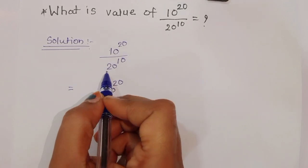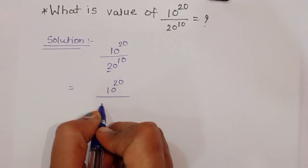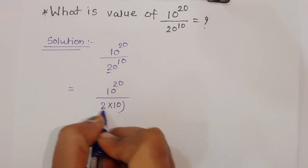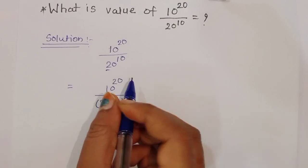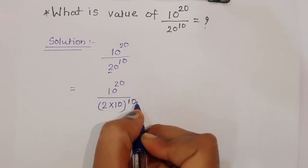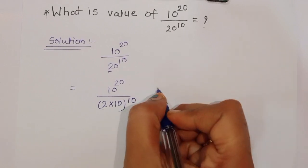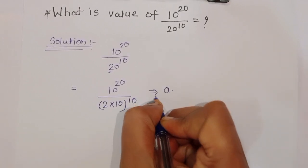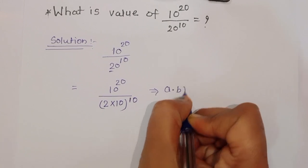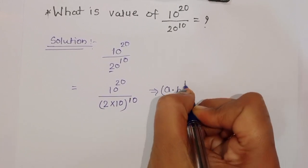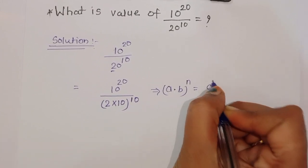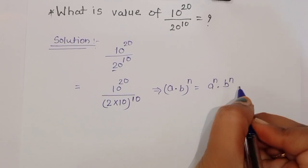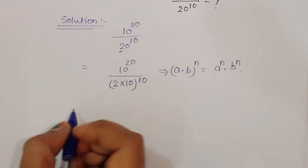We can write 20 as 2 times 10, so the denominator becomes (2 times 10) raised to 10. We use the formula: (a times b) raised to n is equal to a raised to n times b raised to n.